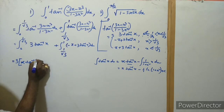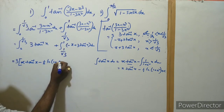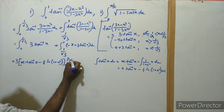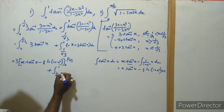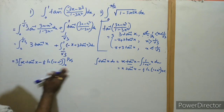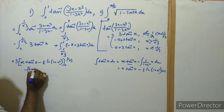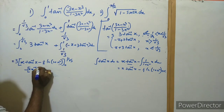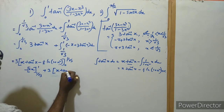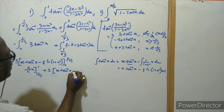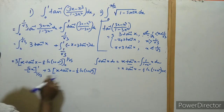So applying this, the first part becomes 3 times [x·tan⁻¹(x) - ½·ln(1 + x²)] evaluated from 0 to 1/√3. For the second part, from 1/√3 to 1, we have the integral of (-π + 3·tan⁻¹(x)) dx, which gives [-πx + 3(x·tan⁻¹(x) - ½·ln(1 + x²))] from 1/√3 to 1.